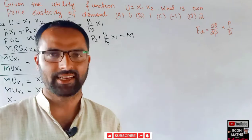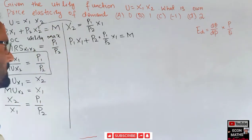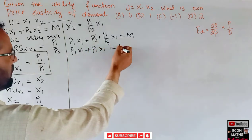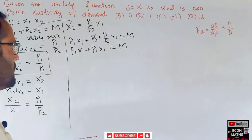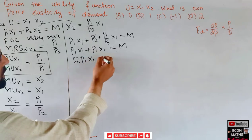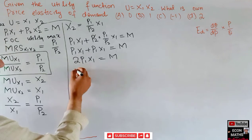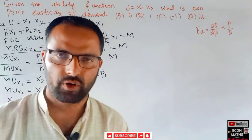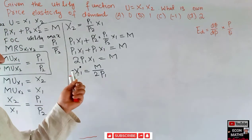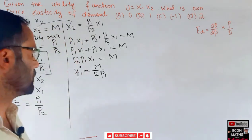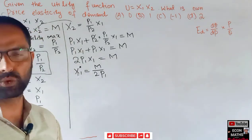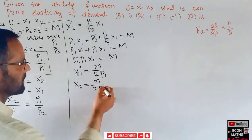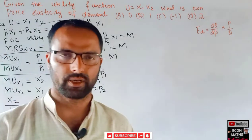We are deriving the Marshallian demand function, also called the ordinary demand function. The p2 cancels, leaving p1*x1 plus p1*x1 equals m, that is 2*p1*x1 equals m. Therefore x1 equals m divided by 2*p1. This is the demand function for good x1, showing that demand is inversely related to its price. Similarly for x2, we get m divided by 2*p2.